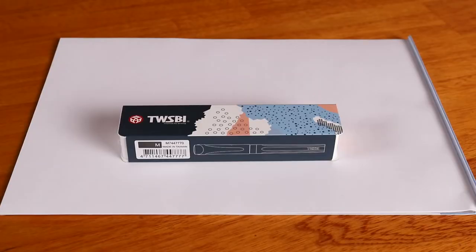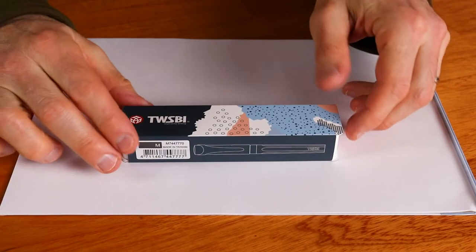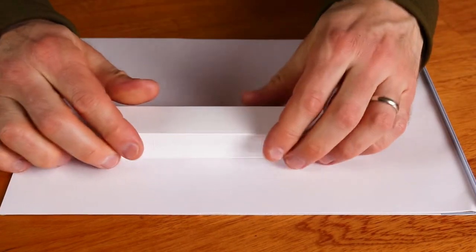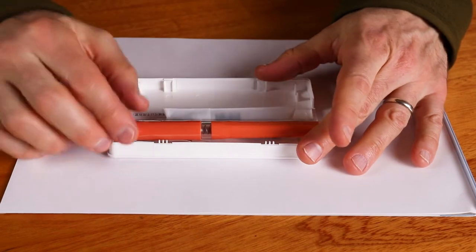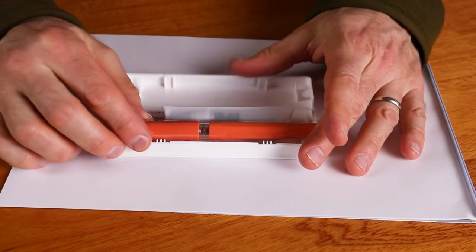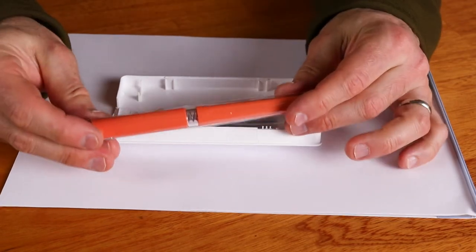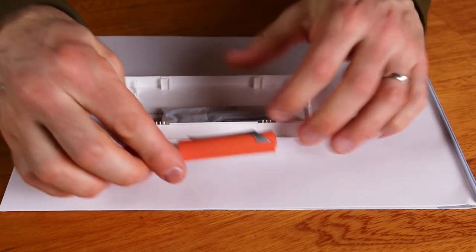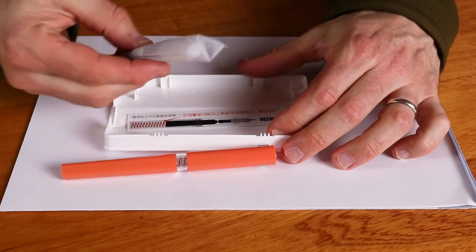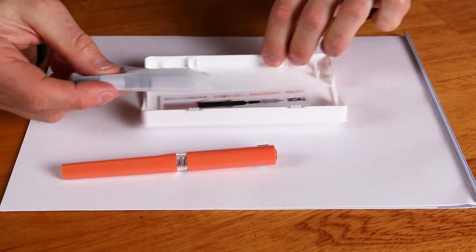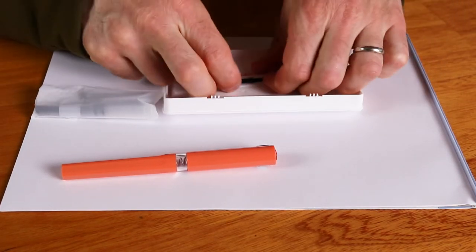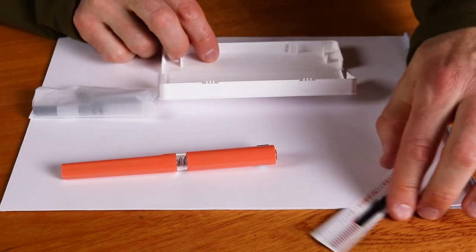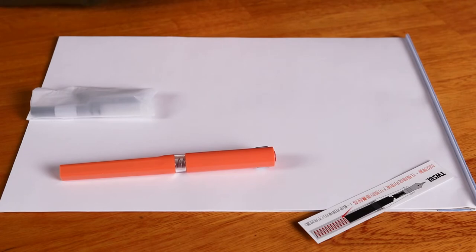Alright, we're going to do an unboxing here. The Twisby Swipe comes in the same gift case as the other Swipes, a nice plastic case with a cardboard cover. The pen itself comes in cellophane to protect it, and you also get this packet of goodies which includes a converter, spring, cartridge, and some instructions as well.